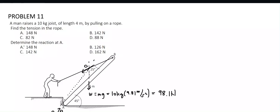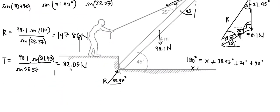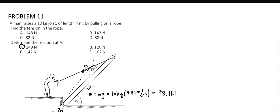So let's check if this is in our choices. R is equal to 147.86, that is A. And for tension, T is equal to 82.05, which is letter C.